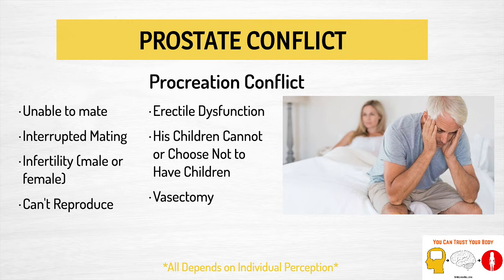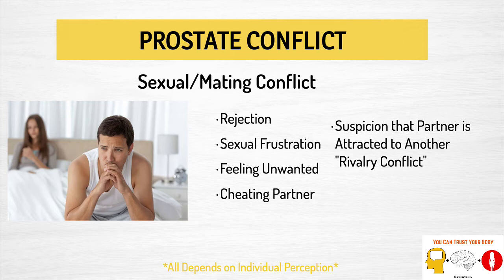As with all conflicts, this all depends on the perception of the individual — how they're seeing the world, how they're perceiving it, how they're feeling about their situation. Another type of prostate conflict is a sexual or mating conflict. This could be due to sexual rejection, sexual frustration, feeling unwanted by their partner, if their partner is cheating, or even if a man suspects that his partner is cheating or is attracted to someone else, which can initiate a rivalry conflict.